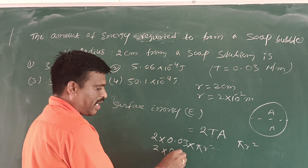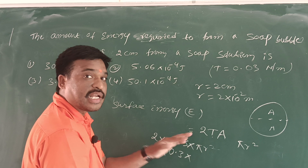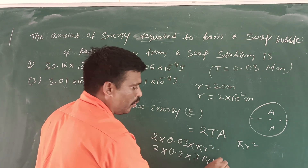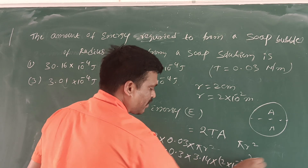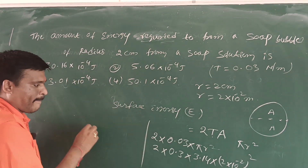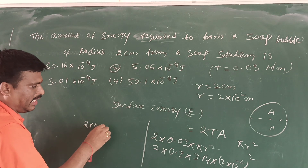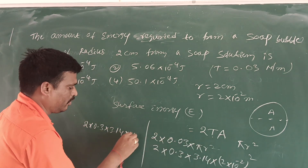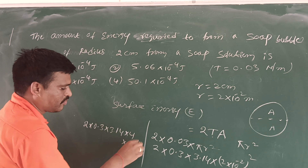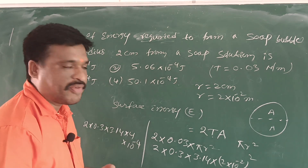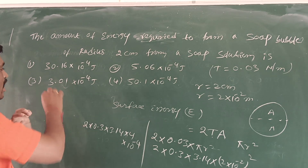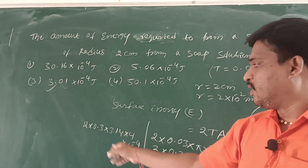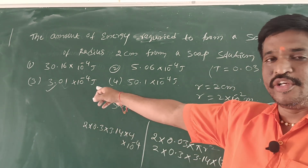2 into 0.03 into pi — pi means 3.14 — into R square, where R square means 2 into 10 power minus 2, whole square. So: 2 into 0.03 into 3.14 into 4 into 10 power minus 4. Simplify it. This answer is 3.01 into 10 power minus 4. The third option is the right answer for this question.